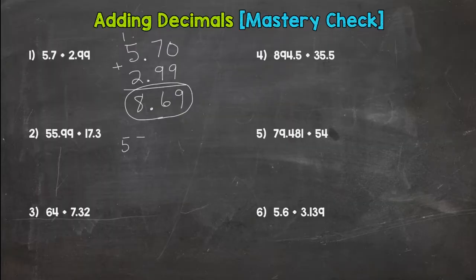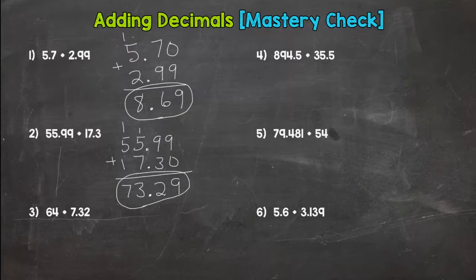Number two. Line them up. And add. Oh, placeholder zero in there. Nine. Twelve. Bring the decimal straight down. Six plus seven is thirteen. And we get to seventy three and twenty nine hundredths for number two. So hopefully we're two for two.